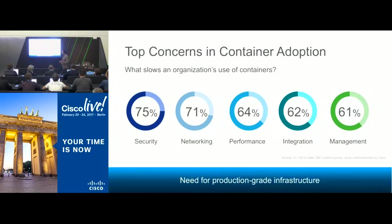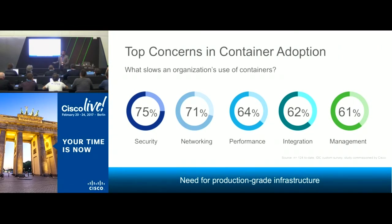The big need for a container ecosystem is a production-grade infrastructure. Many technologies like Docker and Kubernetes are very early — only two or three years old and mostly used by developers, not in production use cases. So how do you run production apps in containers on a production-grade infrastructure? That's where Contiv will help you.